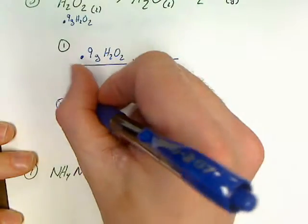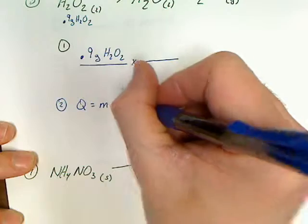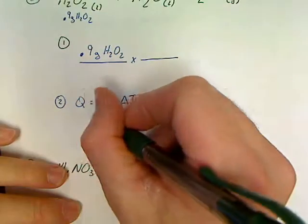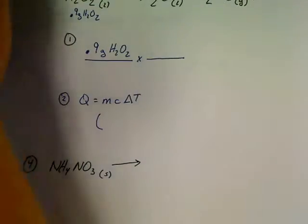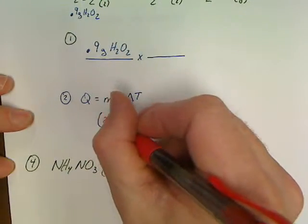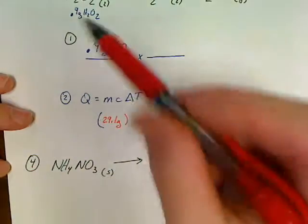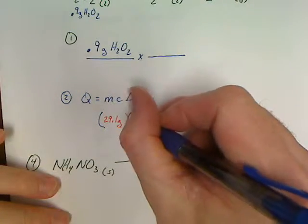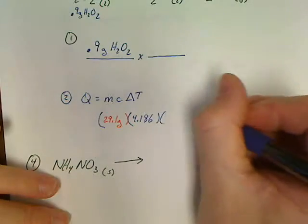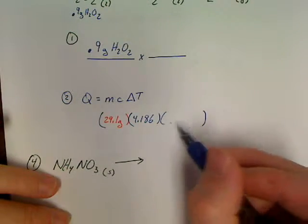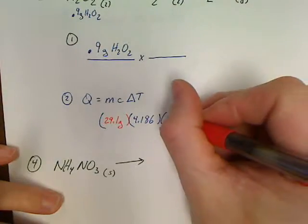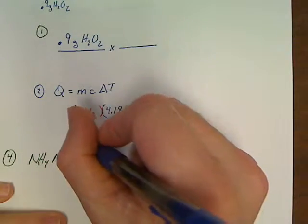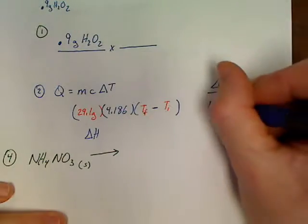Step number two, I want you to do Q equals MC delta T again. The only thing you need from me is what you're going to use for mass on this one. For this one on mass, we're going to use 29.1 grams for our mass of water, because 0.9 grams of the weight is going to be H2O2 and we should have started with 30. Then we can times 4.186 times your two temperatures. Get the two temperatures that give you the greatest change when you go to do your Tf minus Ti.